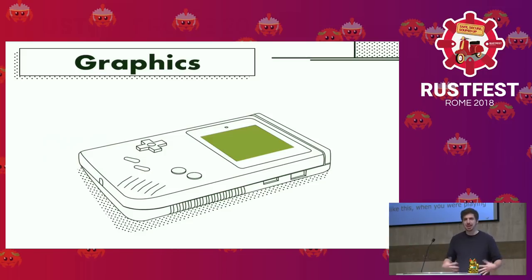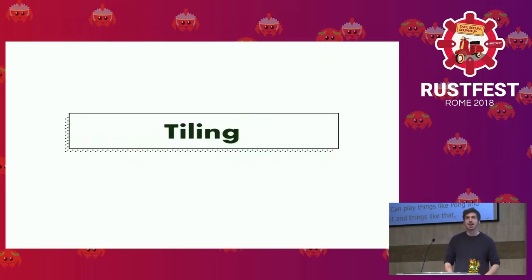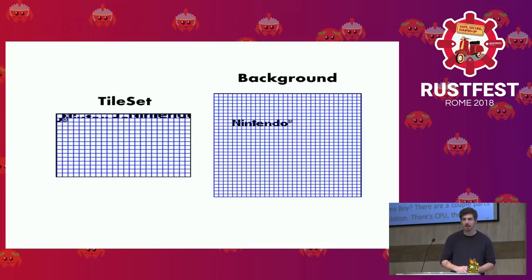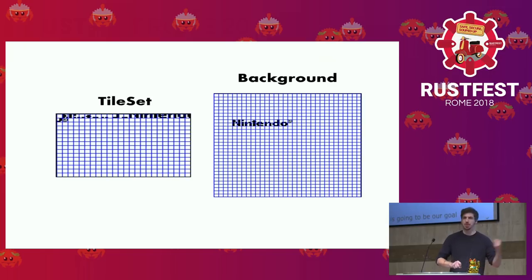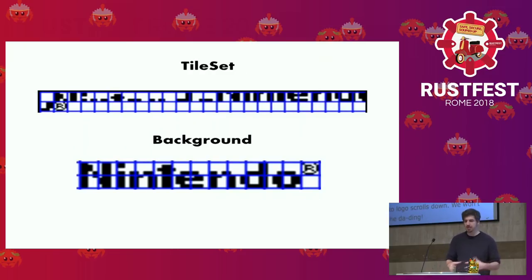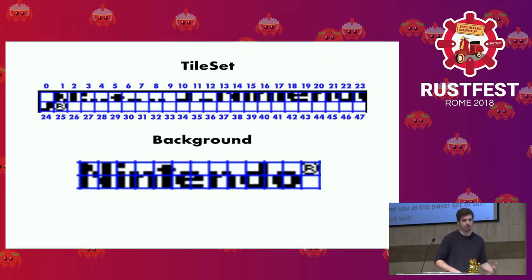Let's start at the top of the stack — the thing that you as the player get to see. We'll start with graphics. The first thing to talk about is the tiling system. When you look at the background of the game, what you'll actually be looking at is a grouping of tiles. The Game Boy does not manipulate pixel by pixel, but rather creates these 8 by 8 pixel tiles, and then you arrange those tiles on the screen. Here on the left we can see the tile set — your 8 by 8 tiles used as building blocks. On the right is the background, and you basically map tiles to places on the background. The tiles are numbered in memory, 0 to 47 in this case, with around 300 total.